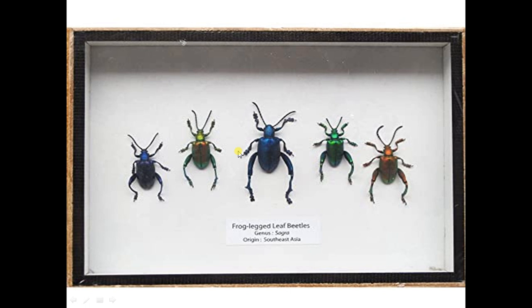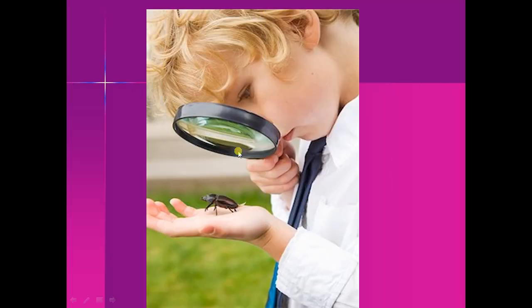Now the next step is performing an experiment. Now this little scientist, you can see here in this diagram, he is performing an experiment. He is using a magnifying glass in order to count the number of legs of each and every insect.